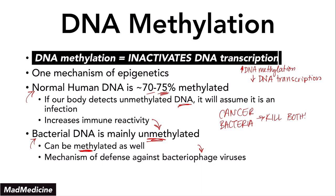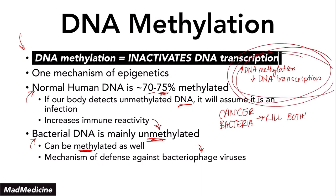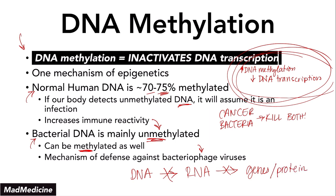That covers essentially everything you need to know about DNA methylation. The most important thing to take away from this lecture: high methylation is going to lead to a decrease in DNA transcription. That means DNA will not become RNA, and you will not get genes being transcribed or proteins being made — and this occurs in highly methylated DNA.